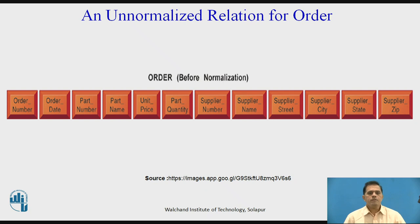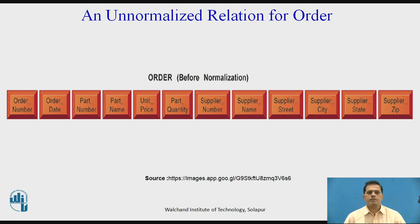First, we see the un-normalized relation in order. When data are placed into database tables, the data are initially in an un-normalized relation. This diagram describes the activities involved in designing a database — knowing the relationships among data elements, the types of data to be stored, and how the organization will manage data, all forming part of conceptual database design.